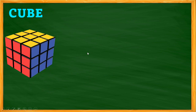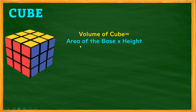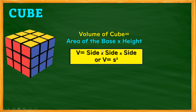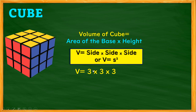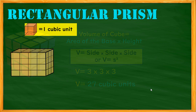Another way to solve for the volume of a cube: Volume equals the area of the base multiplied by the height. The area of the base is side multiplied by side, so the full formula is side × side × side, or V = s³. Substituting: 3 units × 3 units × 3 units equals 27 cubic units.